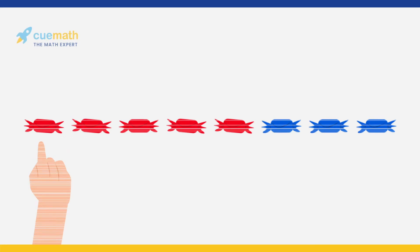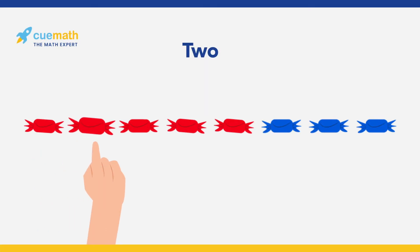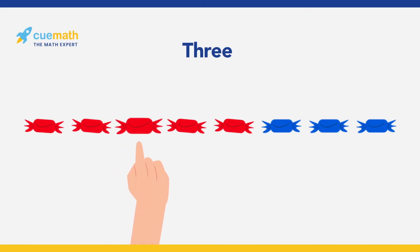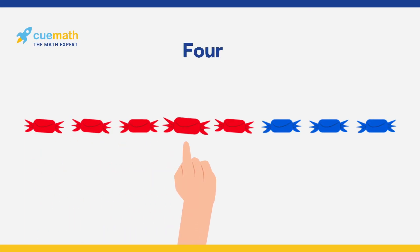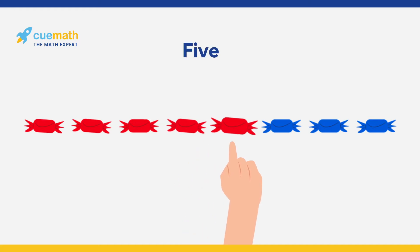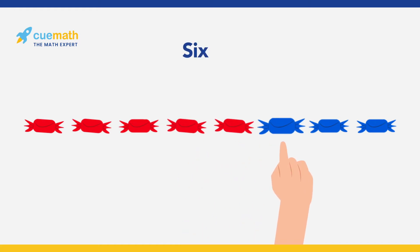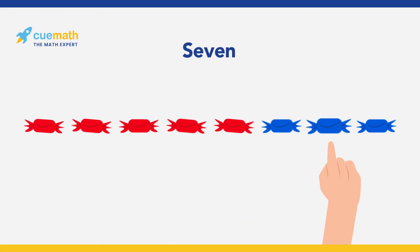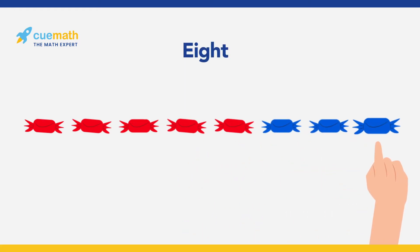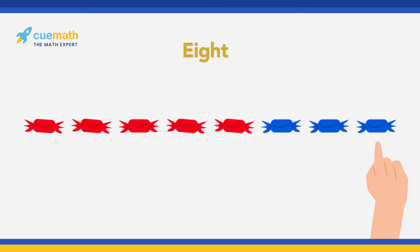Ben starts counting all the candies: one, two, three, four, five, six, seven and eight. There are eight candies.